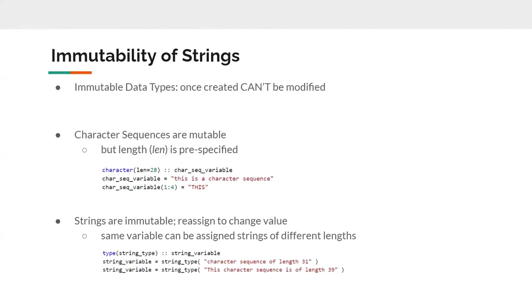Strings are immutable by design, unlike character sequences which are mutable. In the first code snippet, I defined a character sequence variable and assigned it a character sequence, and in the third line I modified the first four characters to capital T-H-I-S. Note that I cannot assign this character sequence variable a character sequence of a different length than 28 — and that's the limitation which strings are trying to handle. Strings are immutable, meaning you cannot modify them once they are created; the only option is to assign a string type variable a new string. The same string type variable can be assigned strings of different lengths.